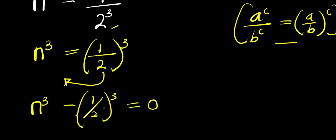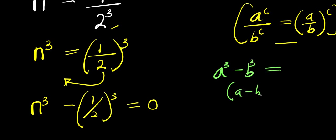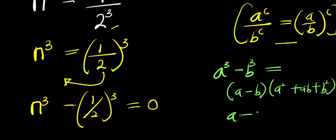From here we need to solve this, and we can use the difference of cubes identity: a³ minus b³ equals (a minus b)(a² plus ab plus b²). In this case, my a is n and b is 1 over 2.